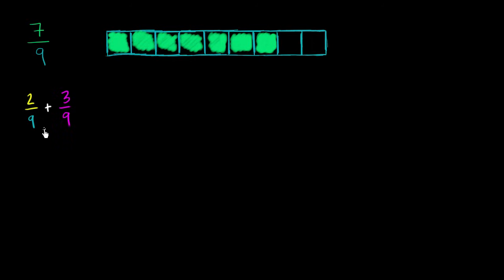But that doesn't quite get us to 7/9 yet. 2/9 plus 3/9 is going to get us to 5/9. So we're going to need two more. So it's going to be plus another 2/9.